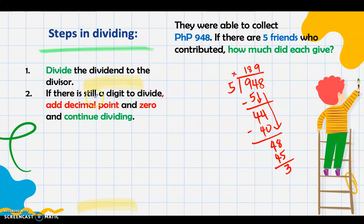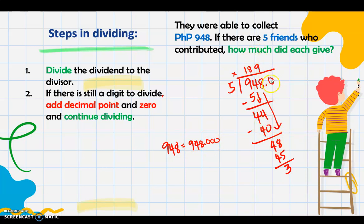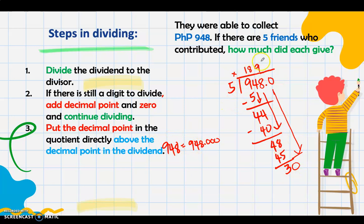In step 2 of dividing decimals, if there's still a digit to divide, add a decimal point to the dividend and add 0, then continue dividing. 948 is equal to 948.000 — it doesn't change the value if you add a decimal point and zeros. Since there's a 0 here, you bring down the 0, then you have 30. 30 divided by 5 is 6. In step 3, put the decimal point in the quotient directly above the decimal point in the dividend.